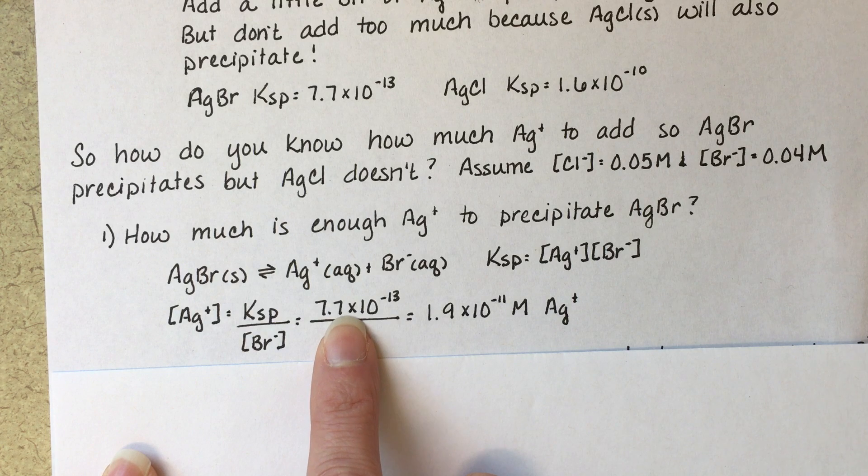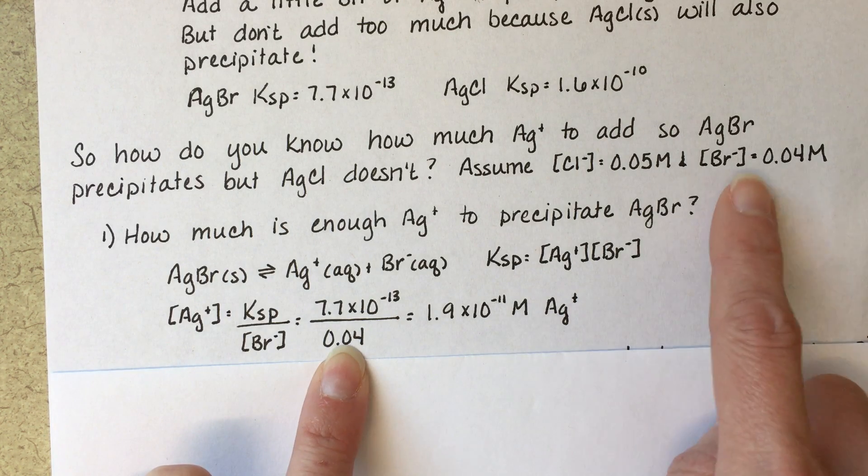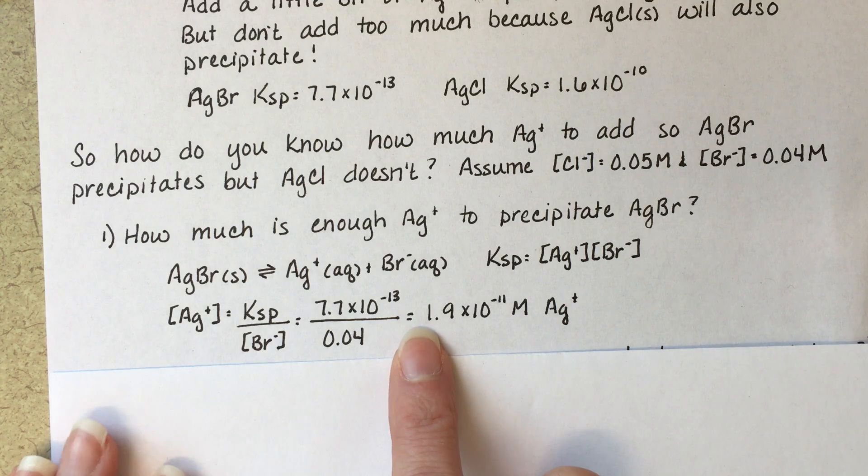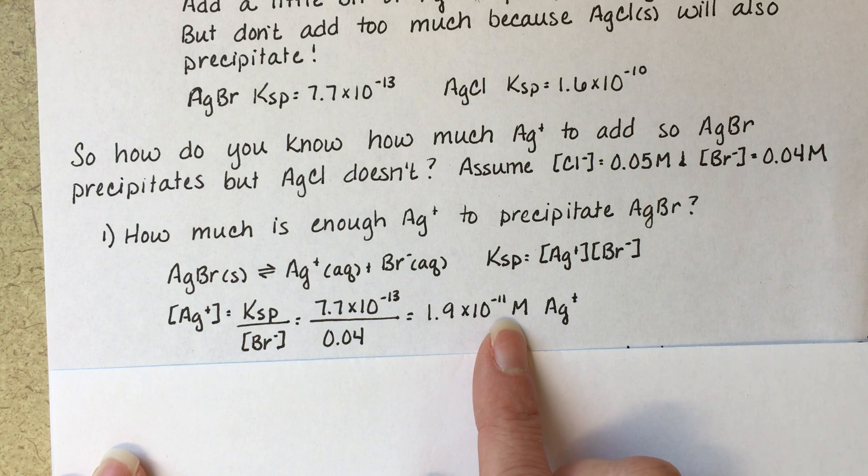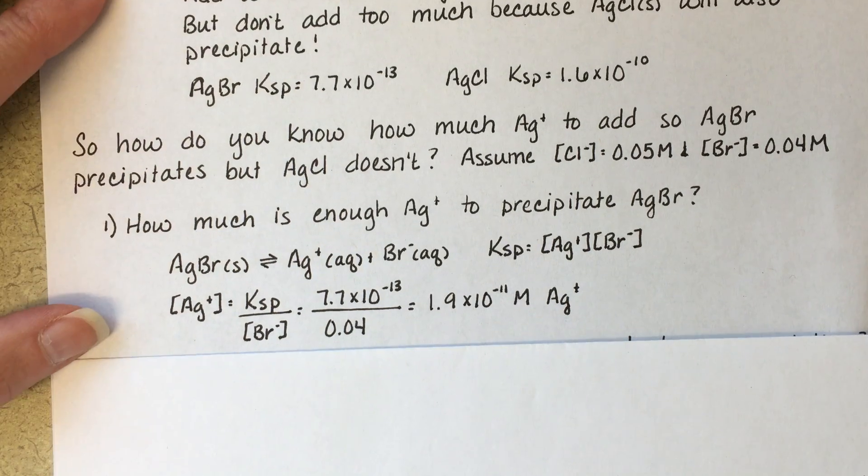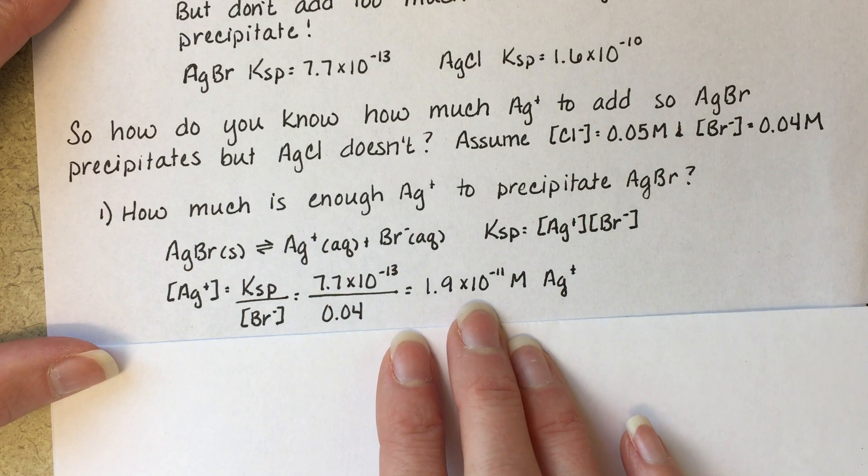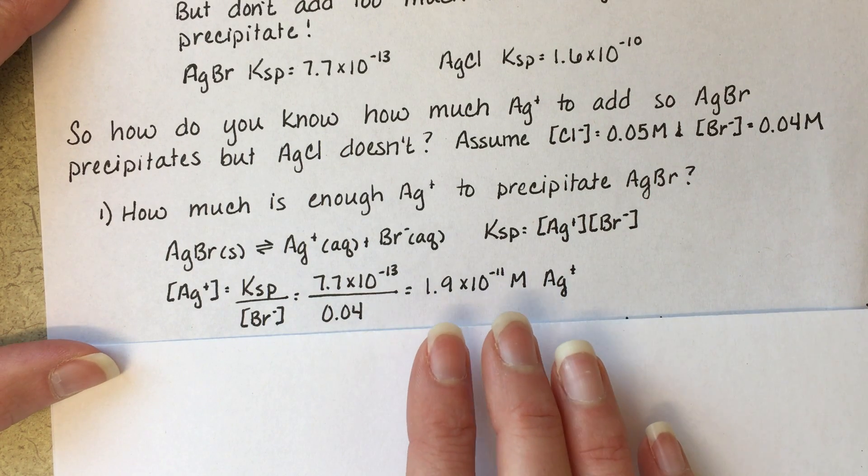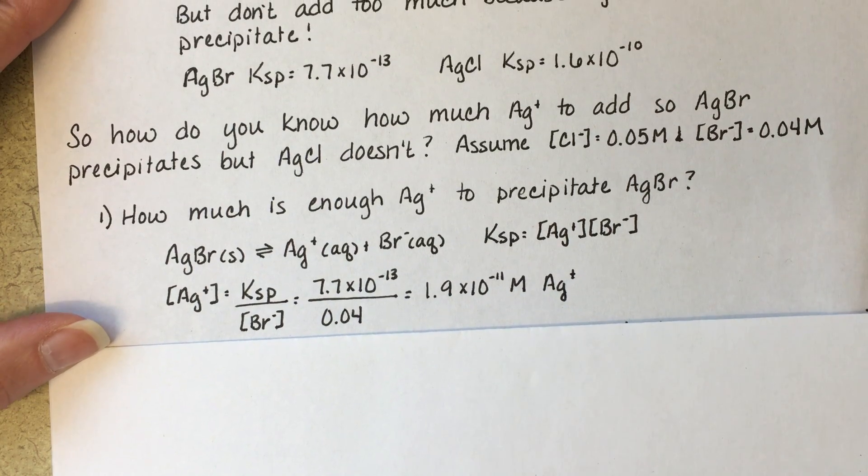And that's with this right here, 7.7 times 10 to the minus 13, which is the KSP, and 0.04, which is the concentration of bromide. That tells us that we need only 1.9 times 10 to the minus 11 molar silver. That's a really dilute solution. So that gives us, that tells us the minimum amount of silver that we need to get silver bromide to come out.